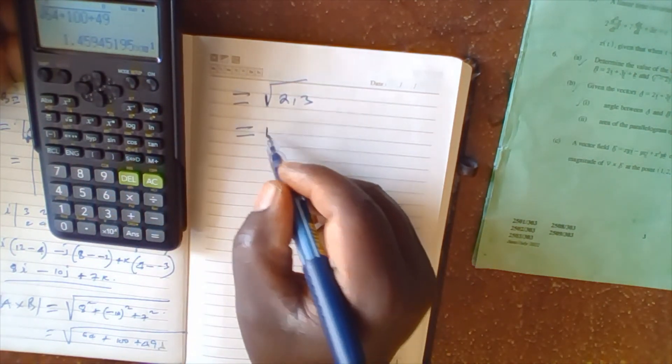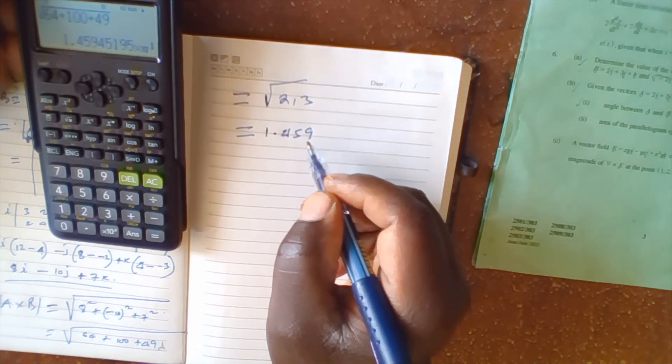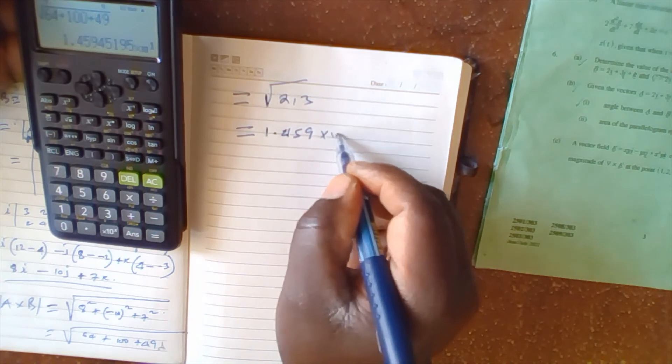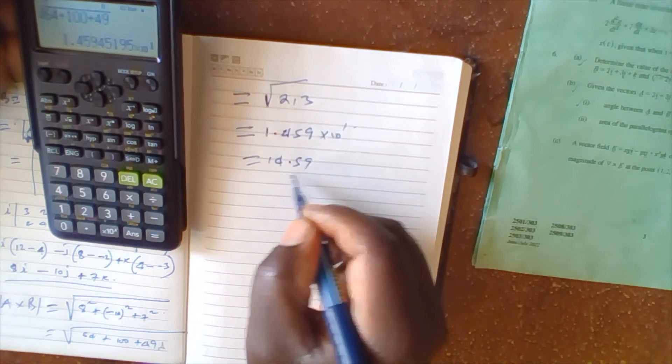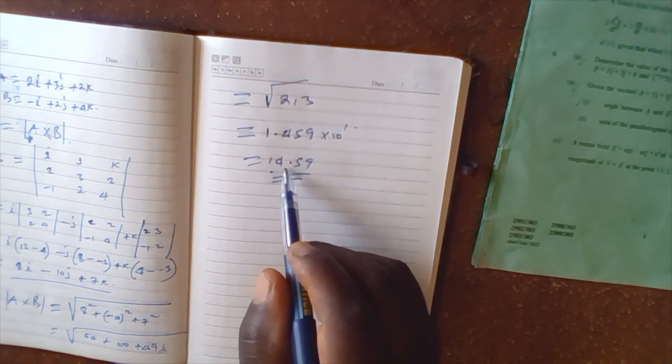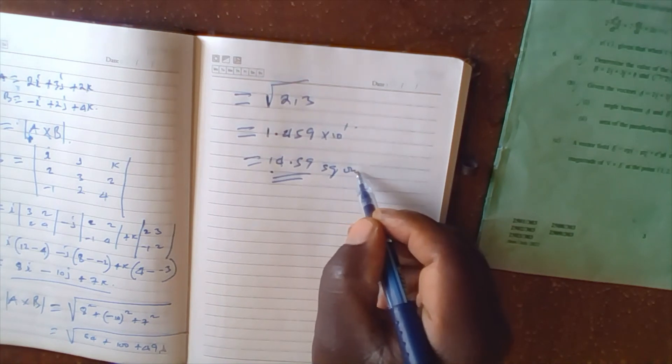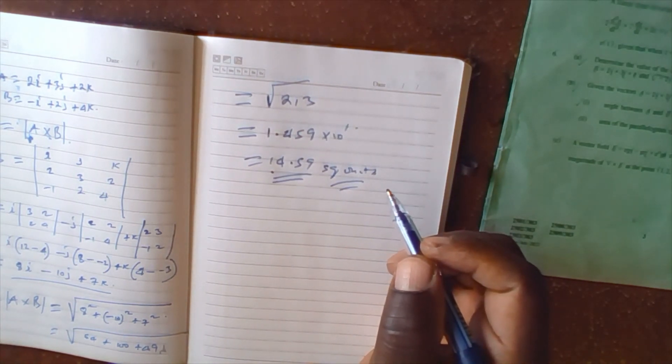This equals the square root of 213, which equals 1.459 times 10 to the power of 1, which equals 14.59. So the area will be equal to 14.59 square units. Thank you for watching and listening.